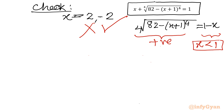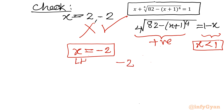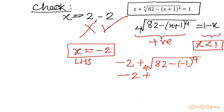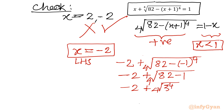Let us verify x equal to minus 2. The LHS becomes minus 2 plus the 4th root of (82 minus (−2+1)^4) equal to minus 2 plus the 4th root of (82 minus 1) equal to minus 2 plus the 4th root of 81. Since 81 equals 3^4, the 4th root gives 3, so minus 2 plus 3 equals 1, which matches the RHS. Verified.